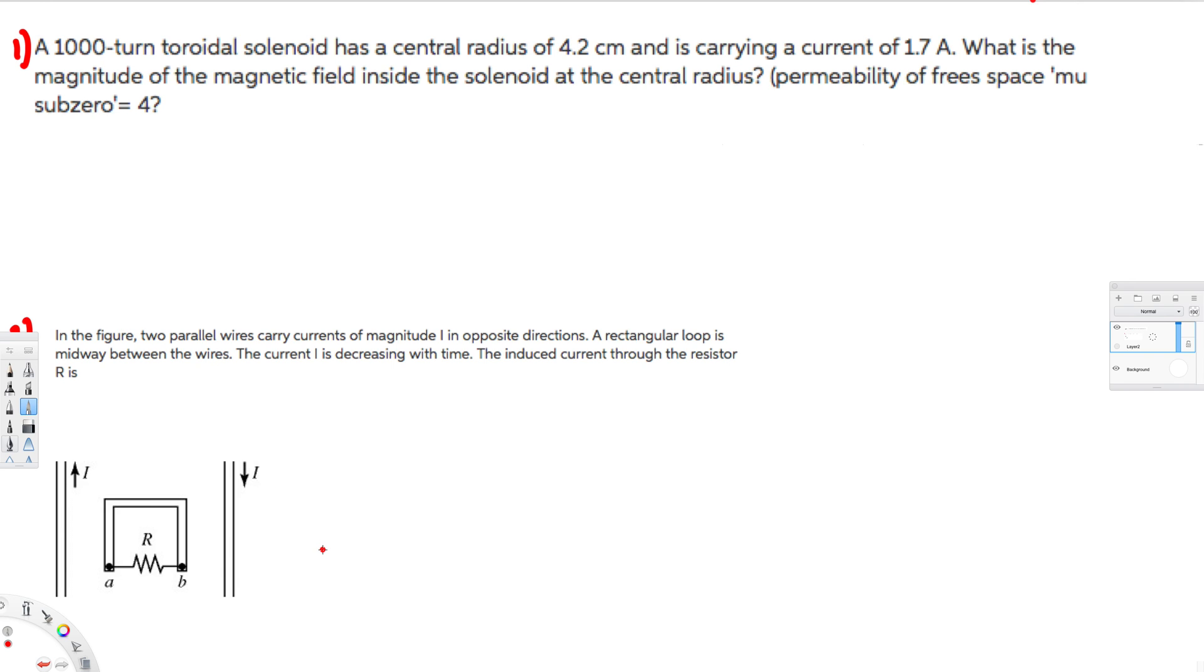Hey, what's going on guys? Let's do this problem. The first question is asking: a thousand-turn toroidal solenoid has a central radius of 4.2 centimeters and is carrying a current of 1.7 amperes. What is the magnitude of the magnetic field inside the solenoid at the central radius? Let's see how we can find it.